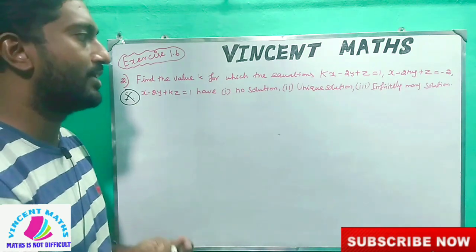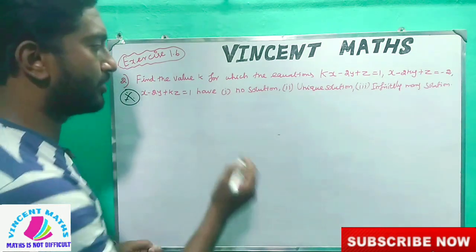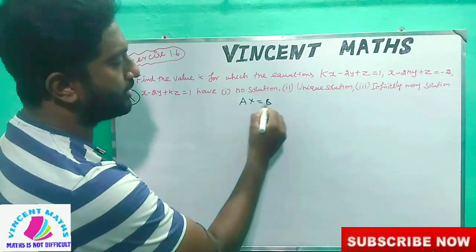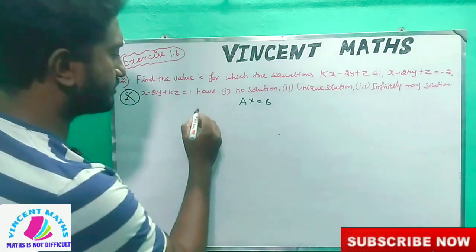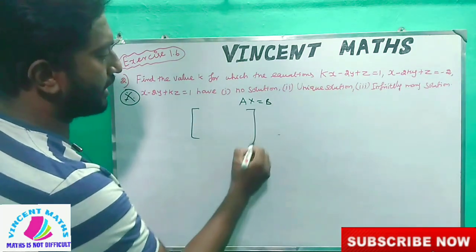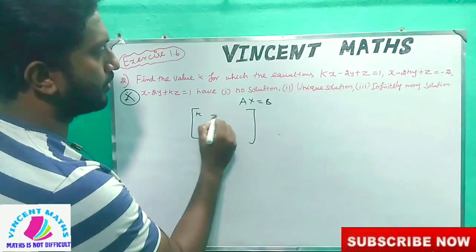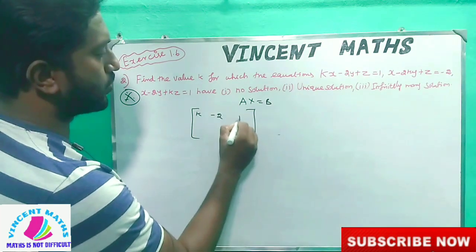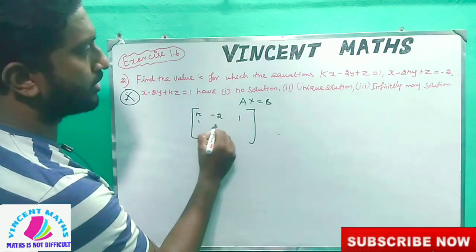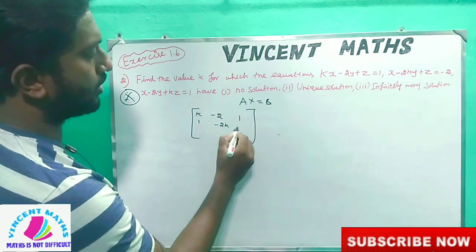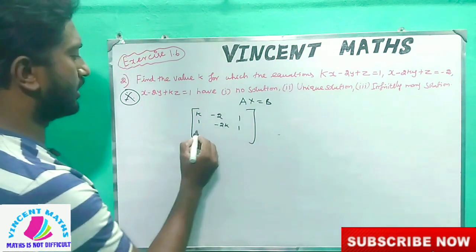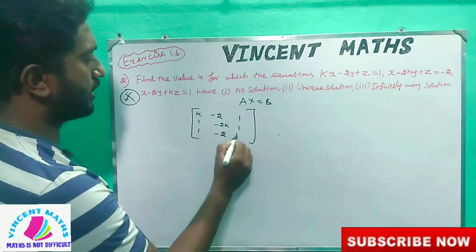Okay friends, now let's look at the equation Ax equal to b. Let's look at the format first. So A matrix — first row: k, minus 2, 1. Second equation: 1, minus 2, k. Third row: 1, 1, minus 2, k.